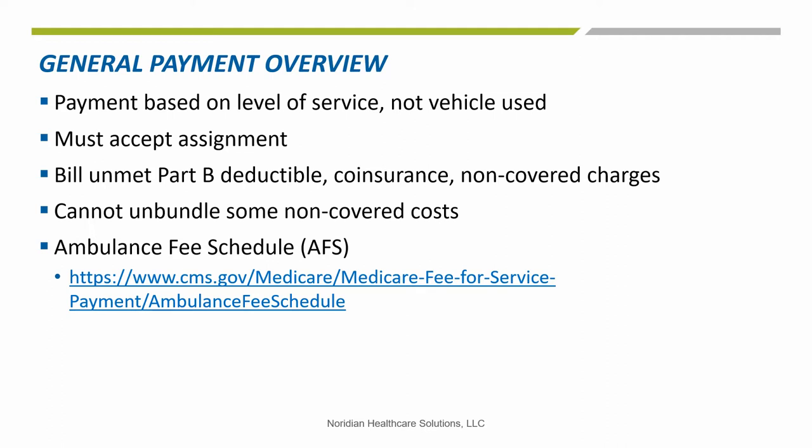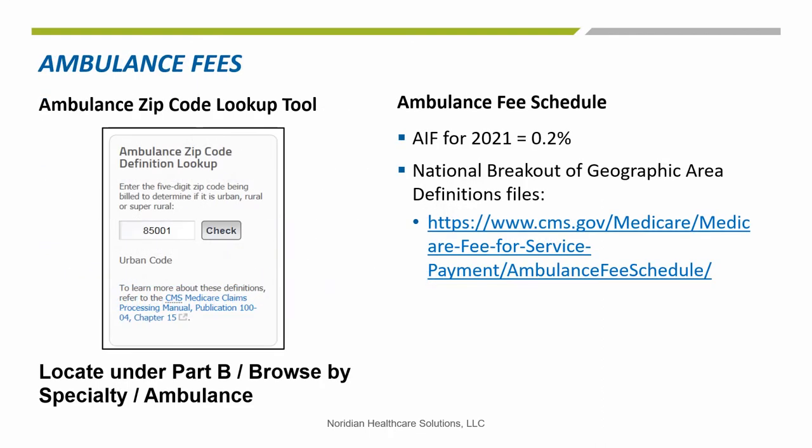Ambulance codes have their own fee schedule, which is listed here. The ambulance inflation factor is used to determine the payment limit for ambulance services. Air and ground ambulance mileage rates are adjusted by the yearly ambulance inflation factor. Refer to the Ambulance Fee Schedule on the CMS website for information on the breakdown of fee schedule amounts.